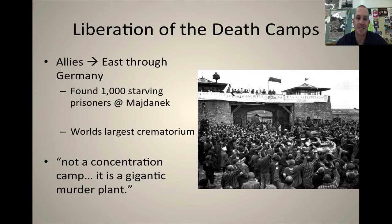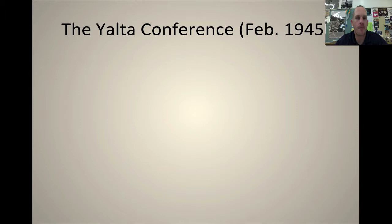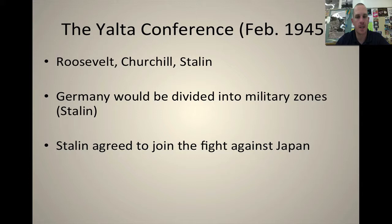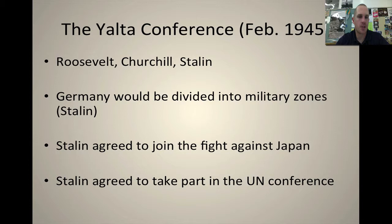The Yalta Conference, February 1945 — you have Roosevelt, Churchill, and Stalin. With the end of the war being imminent, the idea when they get together at Yalta is to decide what's going to happen with Germany after the war. Stalin wants Germany divided into military zones. If Roosevelt and Churchill agree to this, Stalin would then agree to join the fight against the Japanese and also agree to take part in the upcoming United Nations Conference.